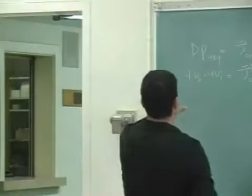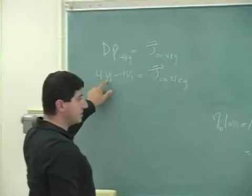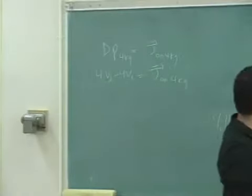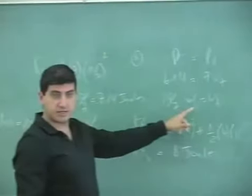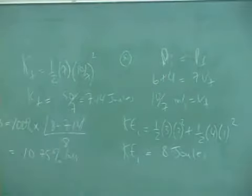And the V final of the 4 kilogram object is, where is it here? We have it, 10 sevenths, because it's part of their system. Together, they're going at 10 sevenths.